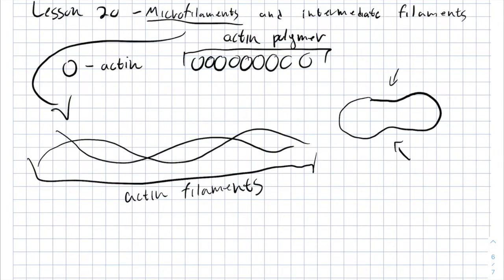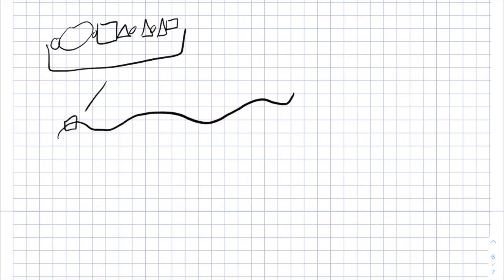The next thing I would like to talk about are intermediate filaments. Unlike actin rods, intermediate filaments aren't made from a single protein. They are made from several different kinds of proteins. But like actin filaments, they do also twist together in order to form a very rigid structure, which is called intermediate filaments.